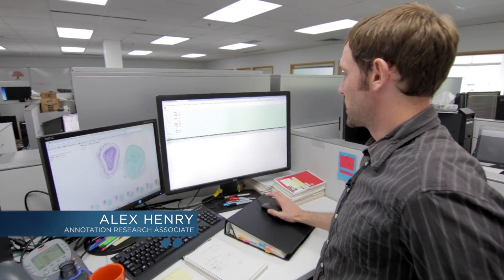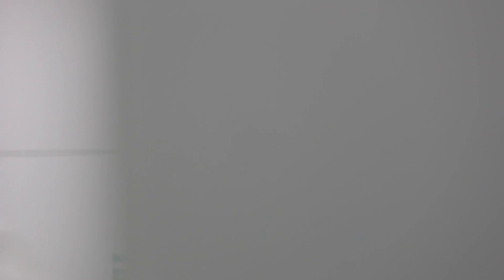Once stitching is complete, the images come to the annotation group. The first step is to look at each of the sections in the image series and look for any of the various scanning artifacts.